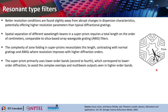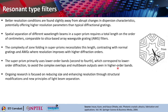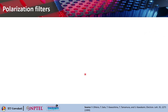The superprism effect primarily uses lower-order bands (second to fourth order) to avoid complex overlaps and multi-beam outputs seen at higher orders. Spatial separation of different wavelength beams requires a total device length on the order of centimeters, comparable to silica-based arrayed waveguide grating filters. Ongoing research aims to reduce device size and enhance resolution through structural modification and new principles of light beam separation.